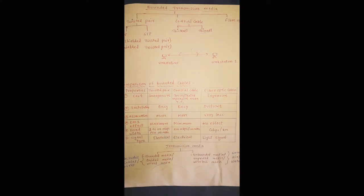Hello, welcome to Techie. Today my topic is Bounded Transmission Media. If we want to install a network, we should consider some points: what is the cost of the media, what is the installation cost, impact of attenuation, EMI, bandwidth of the cable or transmission media, signal type, distance, and how much we can afford for a network. These are the properties or characteristics of transmission media to take into consideration while designing or installing the network.